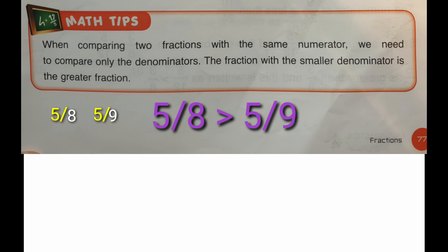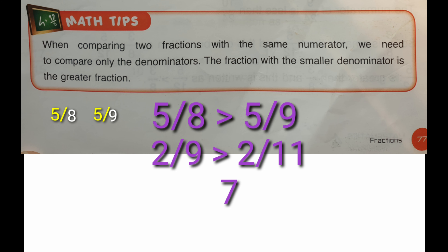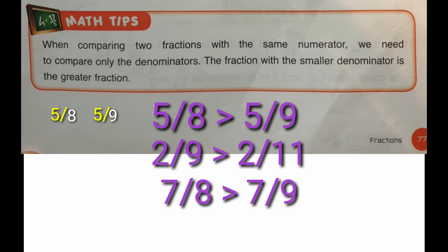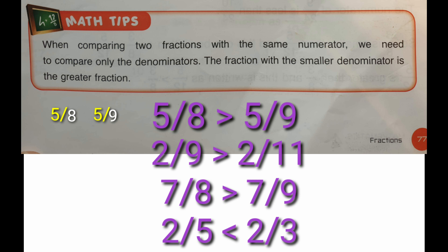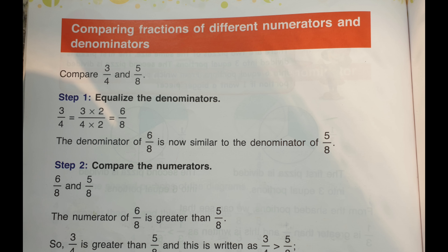Remember: the fraction with the smaller denominator is the greater fraction. More examples: two ninths is greater than two elevenths; seven eighths is greater than seven ninths; two fifths is smaller than two thirds. Next is comparing fractions with different numerators and denominators.